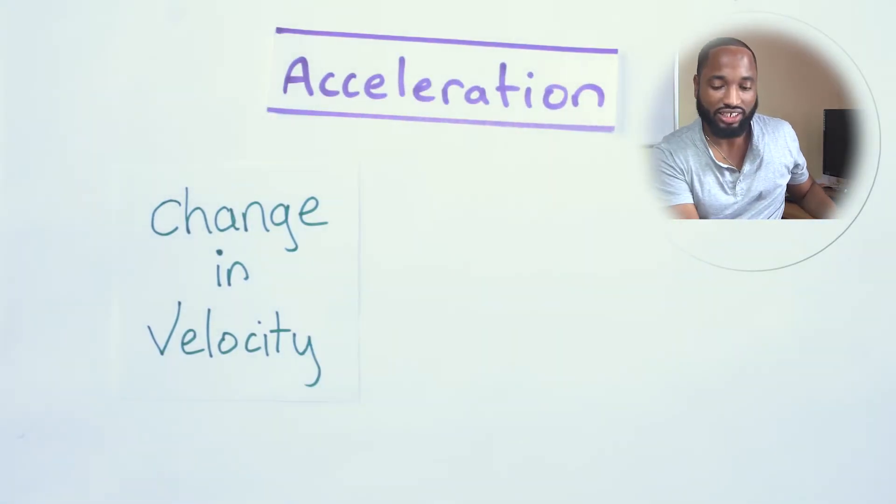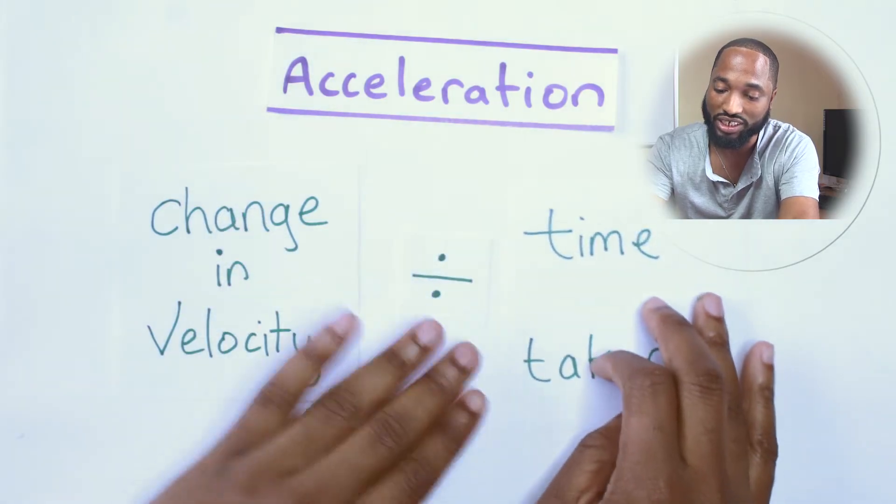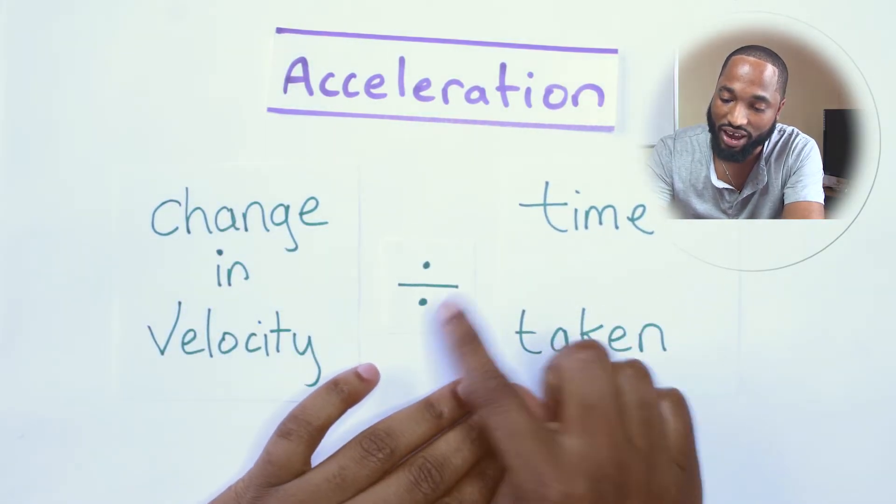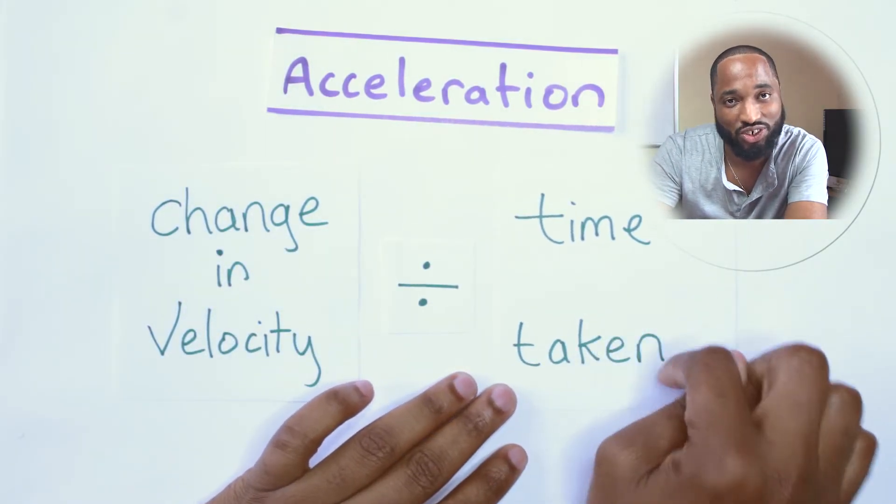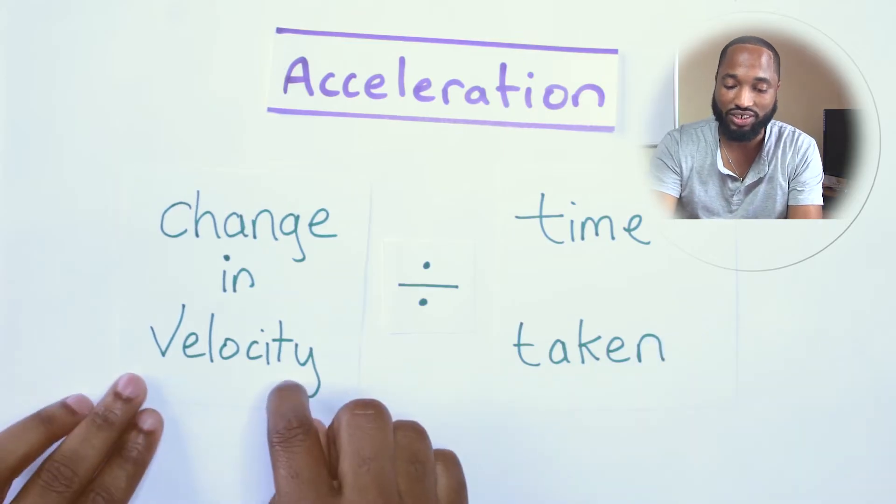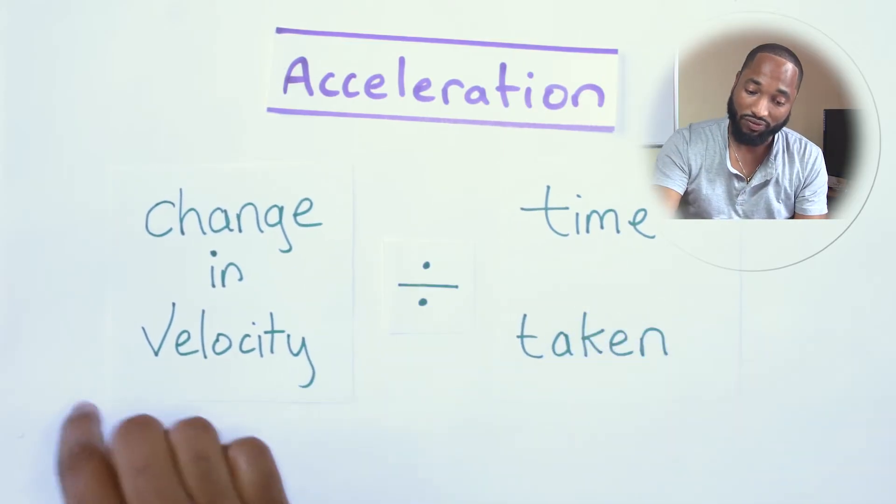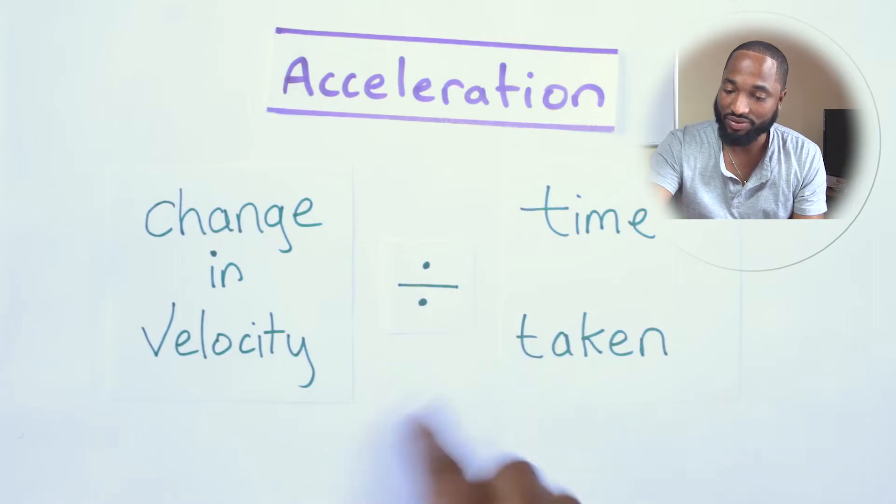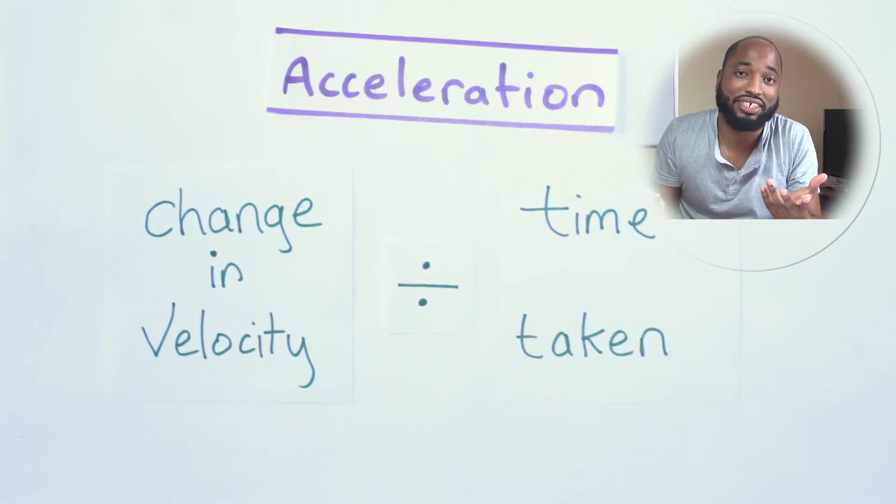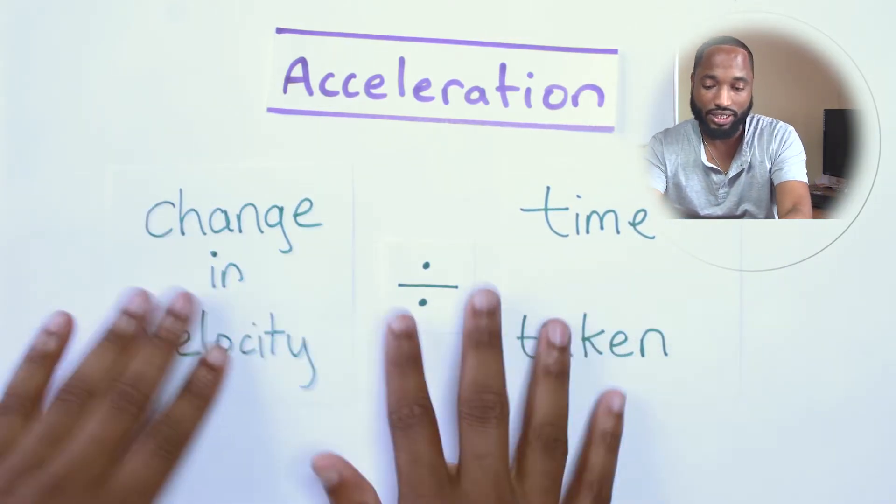So that's acceleration: changing velocity. But you also need to include divided by how fast it takes you to change the velocity. So change in velocity divided by time taken—50 to 100 divided by five seconds, like in the first example I gave. Can you put that in a mathematical way?